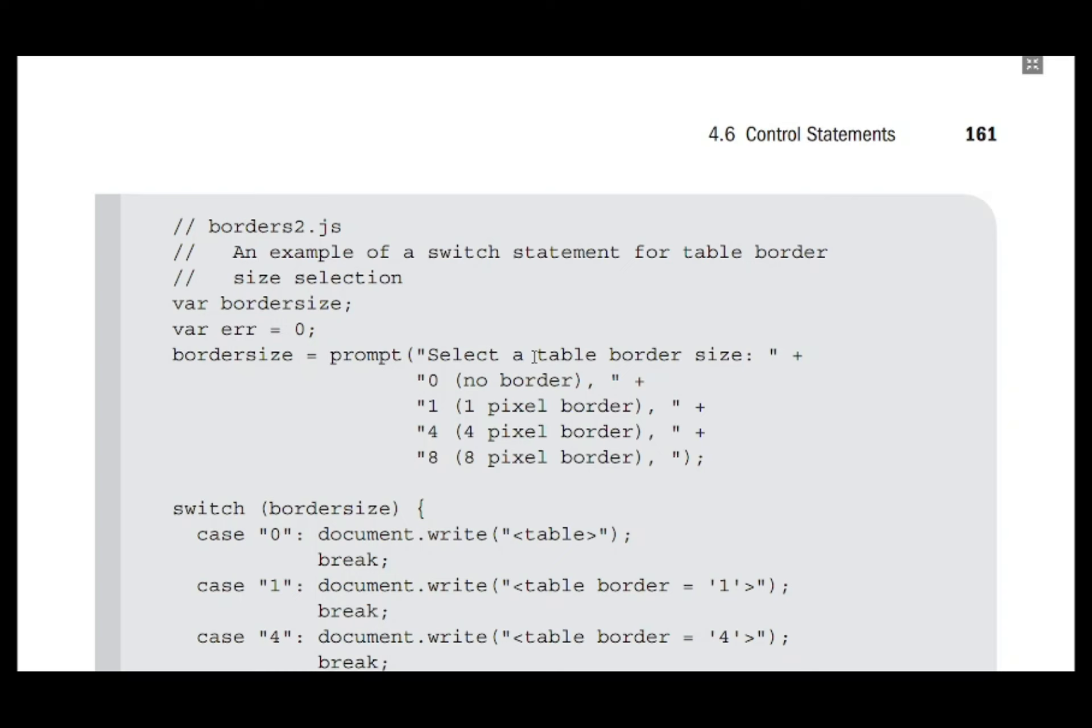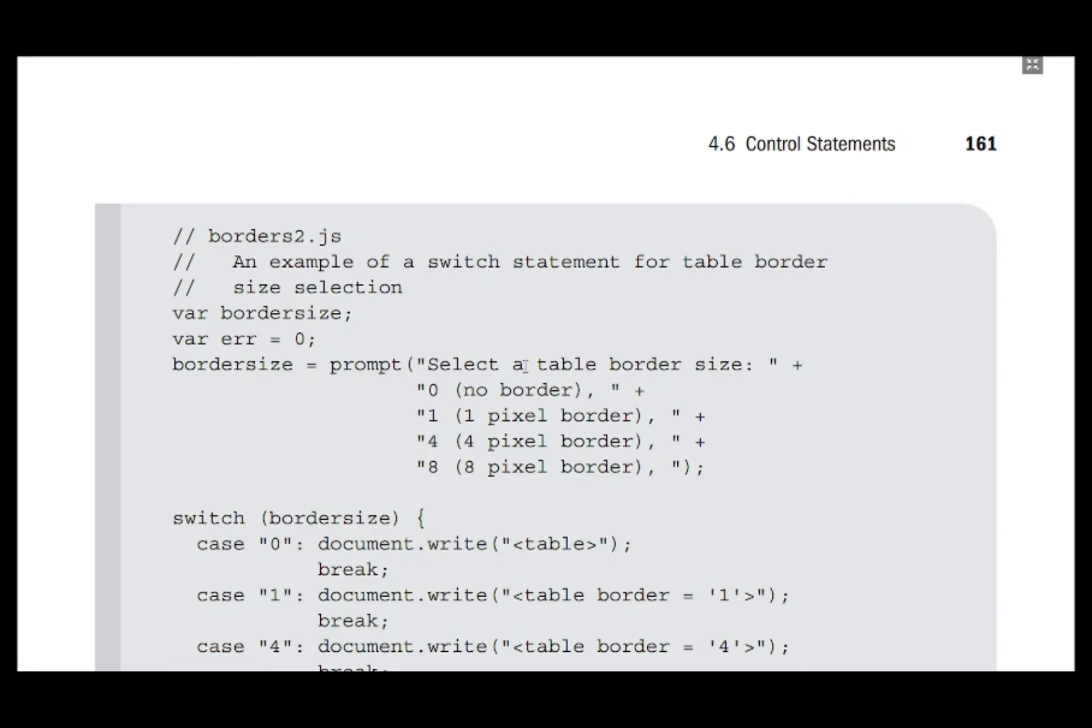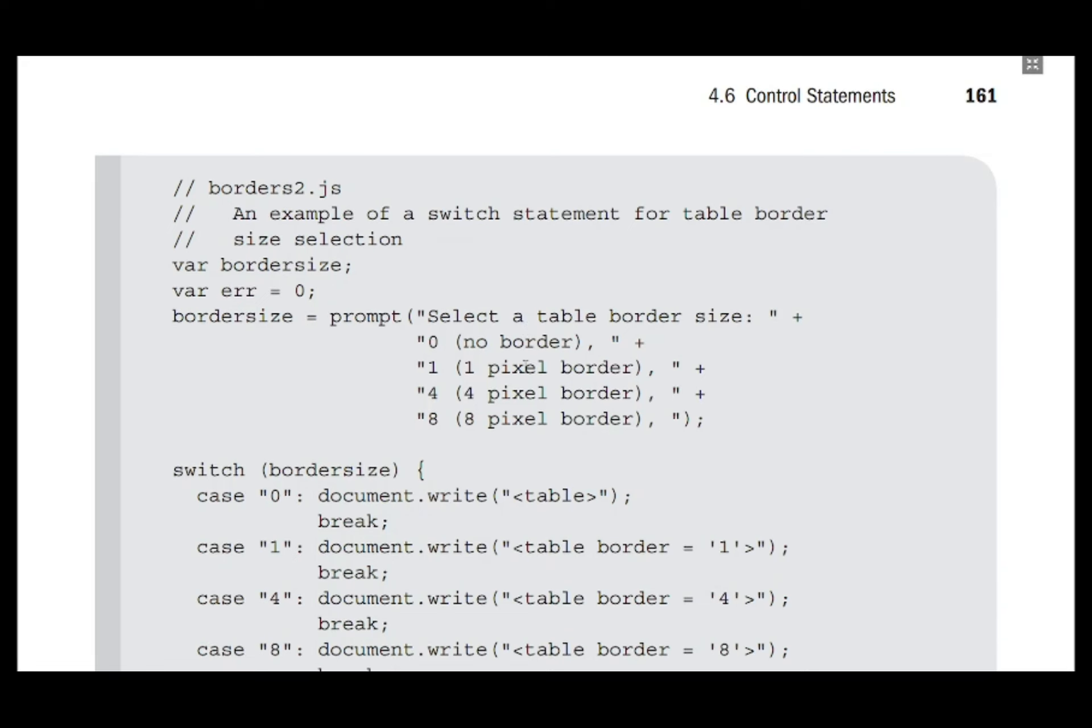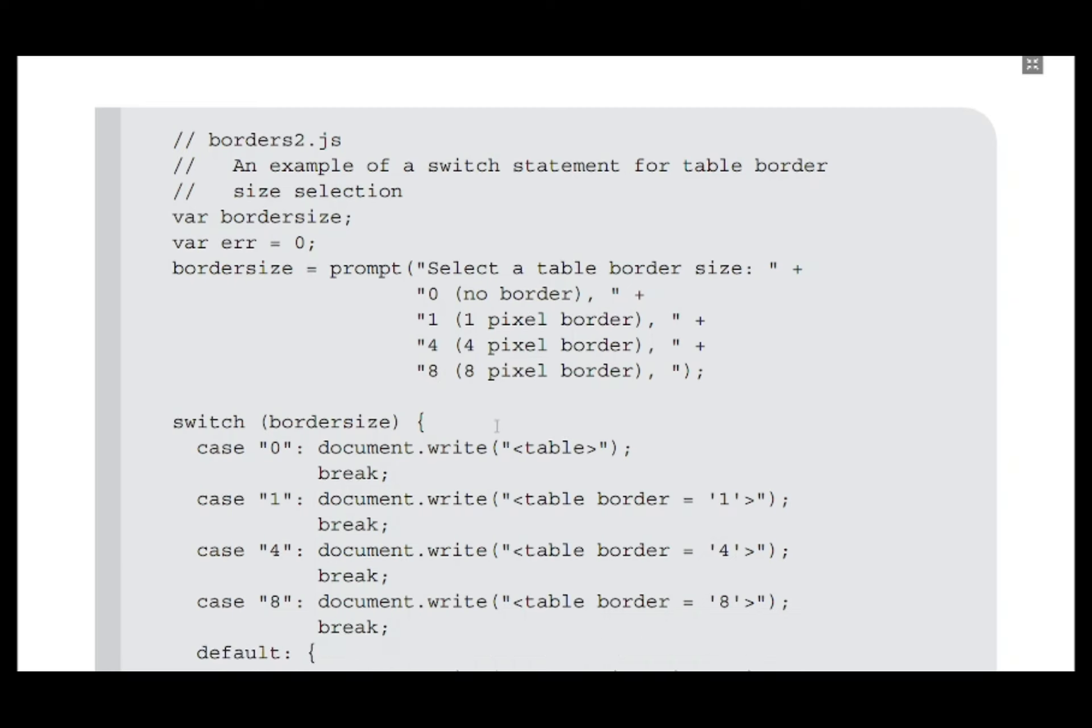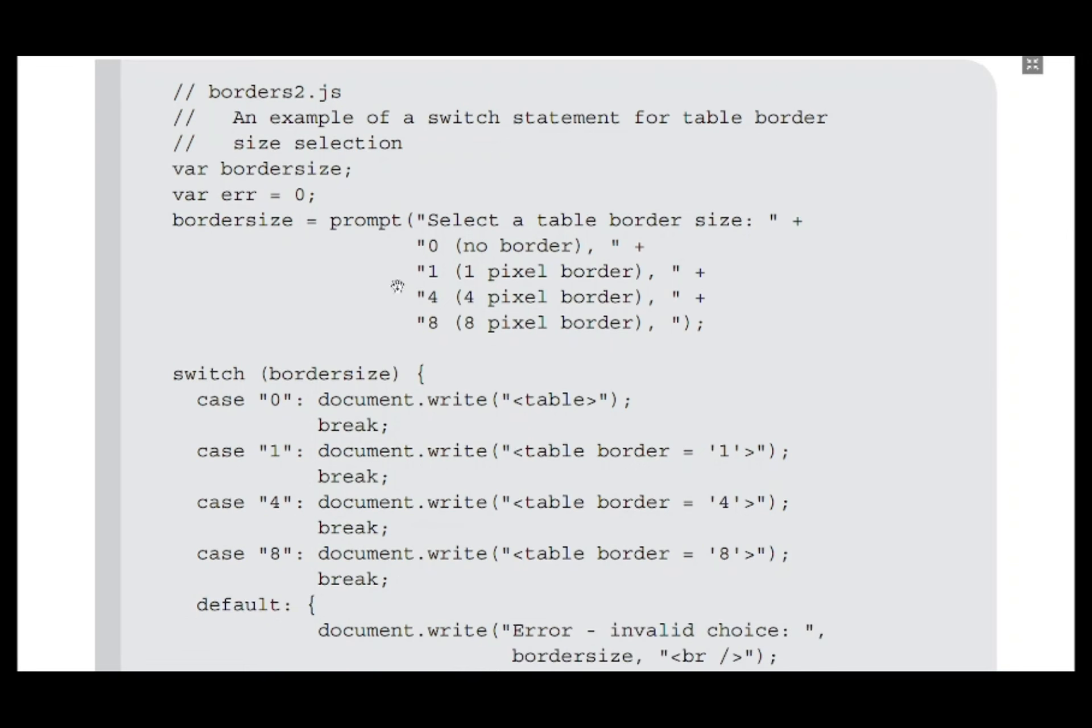If zero is input, a table will be drawn without a border. If one is given, then a table border with one pixel thickness is created. Similarly, for four and eight, thicknesses of four and eight pixels will be used.